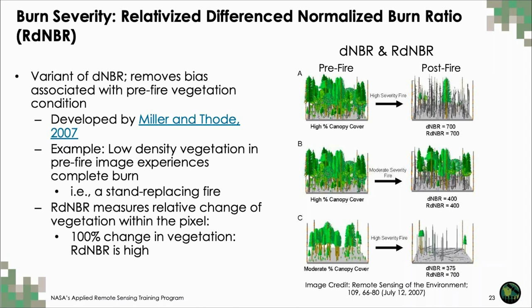I want to briefly mention a variant of the dNBR called the Relativized Difference Normalized Burn Ratio, or RdNBR, developed by Miller and Thode in 2007. The RdNBR attempts to account for differences in vegetation between areas with high and low vegetation cover, measuring relative change per pixel. For example, areas with low canopy cover may appear to have low burn severity simply because there was less vegetation cover pre-fire, and the RdNBR attempts to correct this. It's not always appropriate for every study area, but it's commonly used alongside the dNBR.